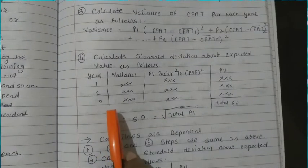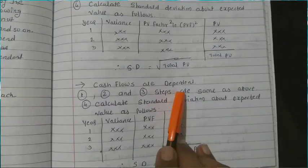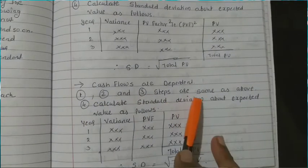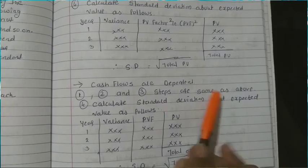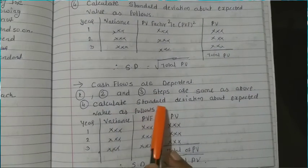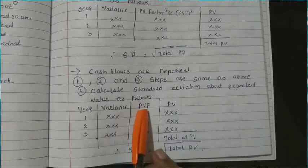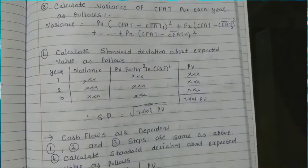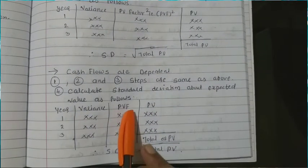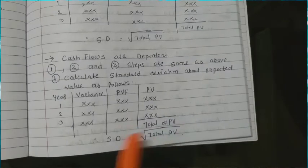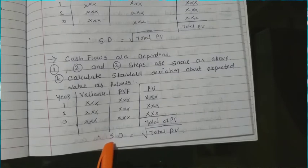These four steps are followed when the cash flows are independent. When the cash flows are dependent, the first, second and third steps are the same — expected CFAT, expected NPV, and variance. However, the standard deviation formula changes for dependent cash flows, specifically in how the present value factor is applied.